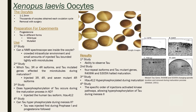Four studies made progress in understanding how tau functions and the effects when hyperphosphorylated or mutated. In the first study, an NMR spectroscope was used to see inside the oocyte and observe the tau protein. Inside was a crowded intracellular environment, with tau bound to microtubules. In a certain physiological state, they could detect phosphorylation of tau, enabling the opportunity to observe the effects of tau hyperphosphorylation.